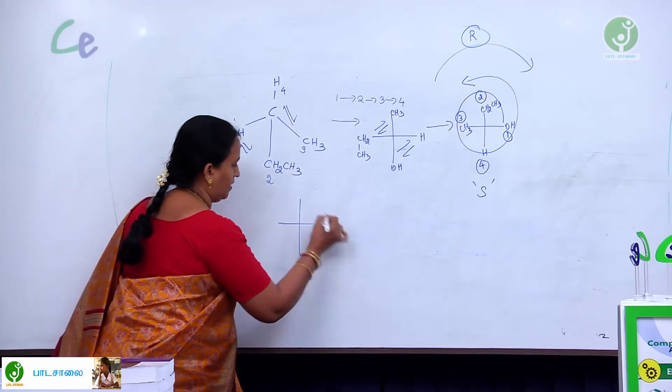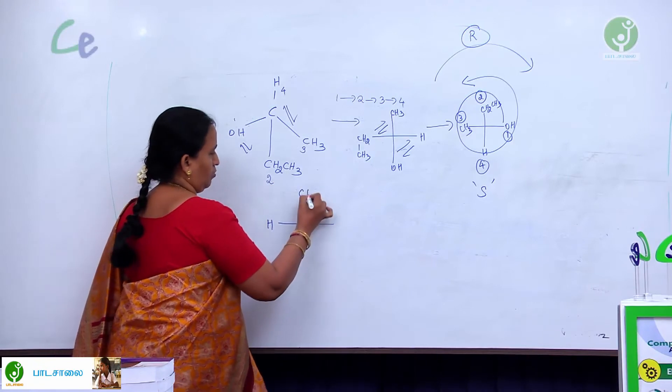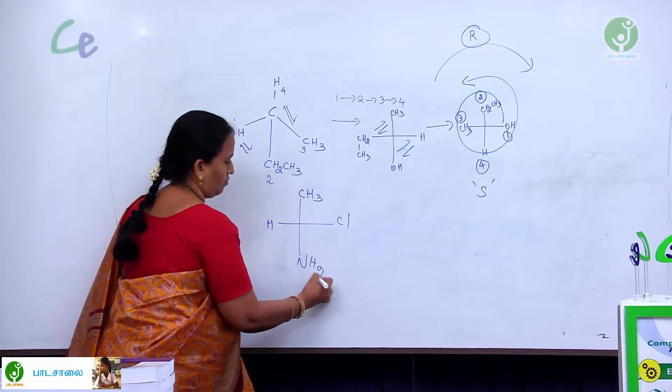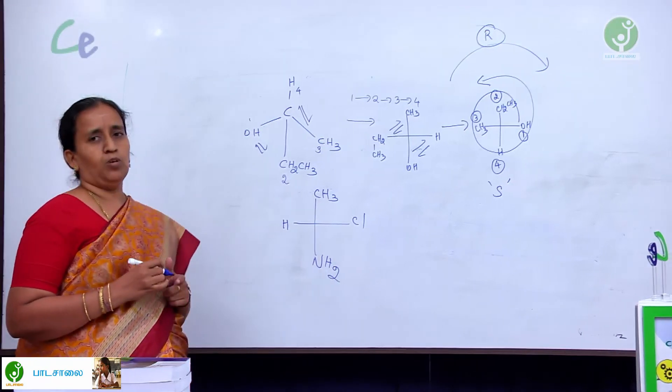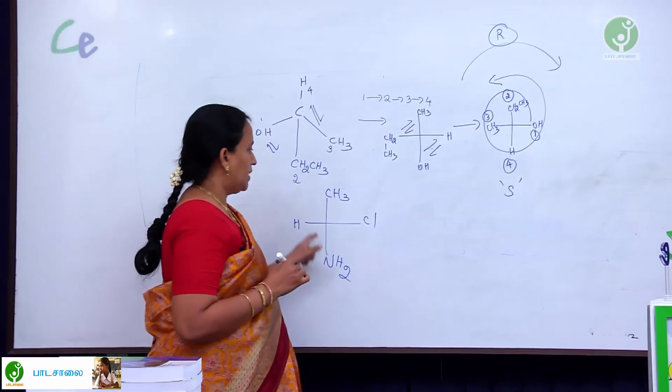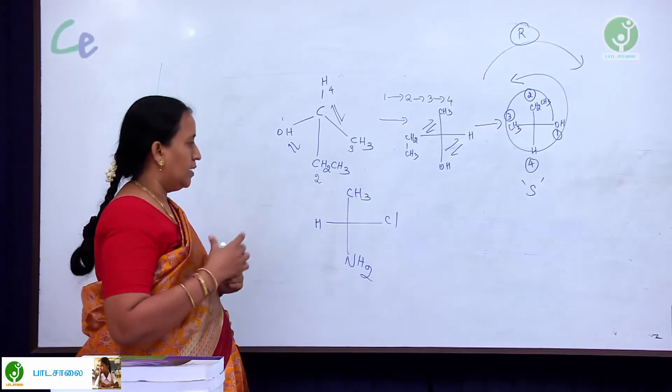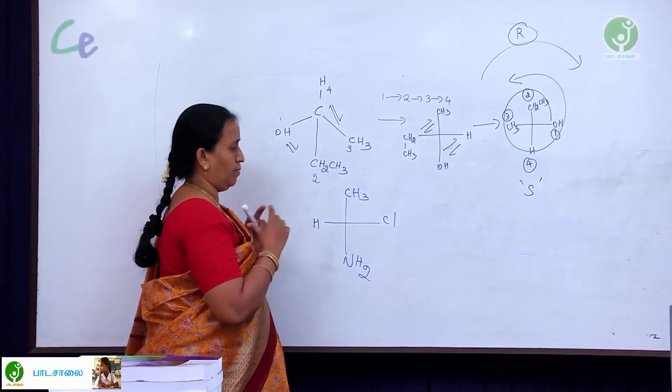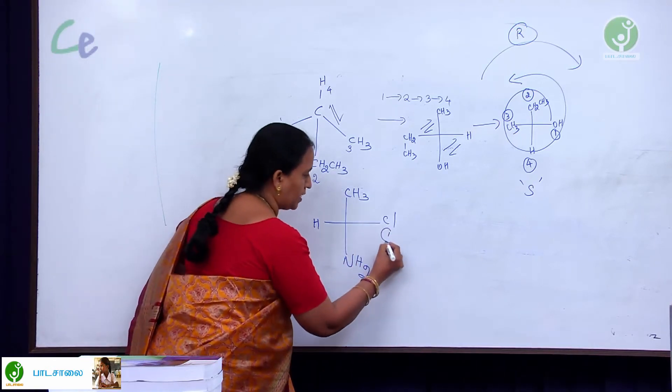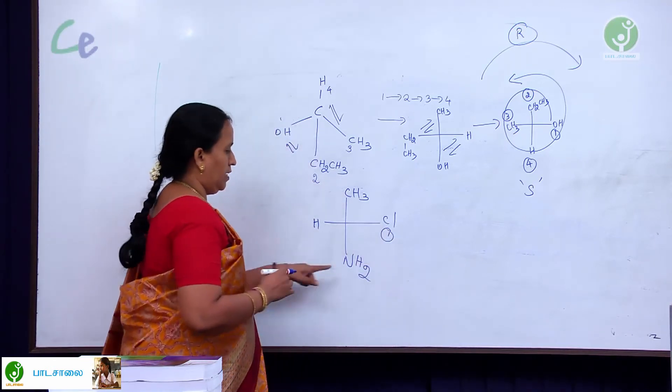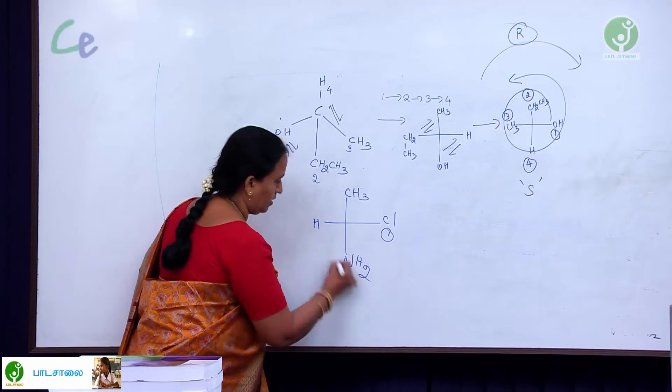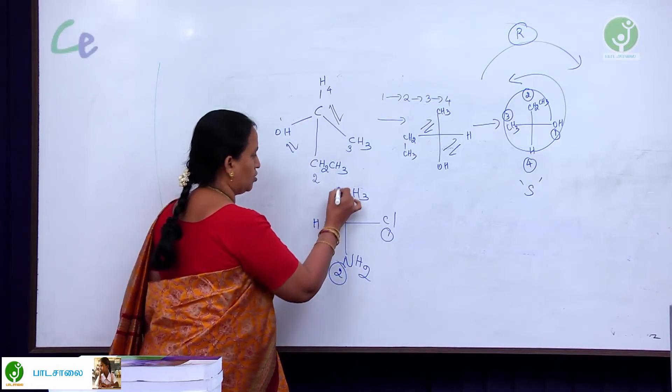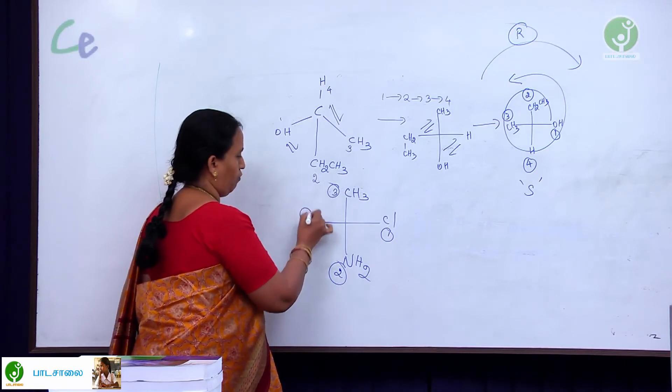Can you assign, what is the given molecule? Whether it is R or S configuration? Come on, let us all do. First, give the priority based upon the atomic number. Chlorine is having the highest atomic number. Then, nitrogen, 7. Carbon is having atomic number 6. So, this goes to 3. This goes to 4.